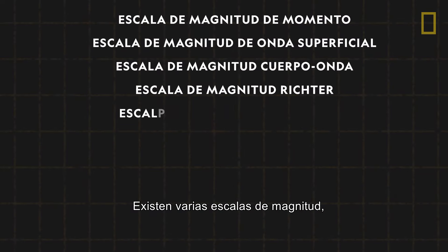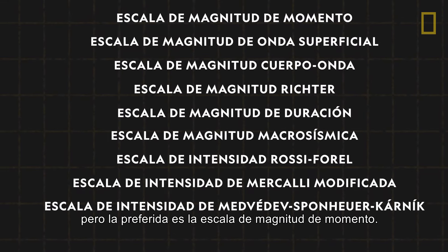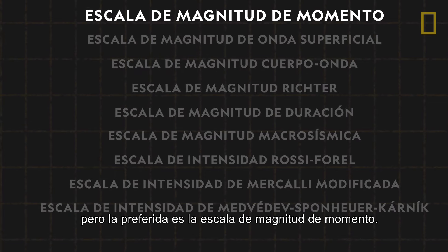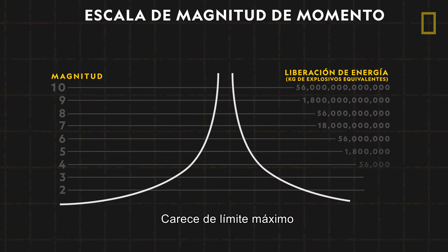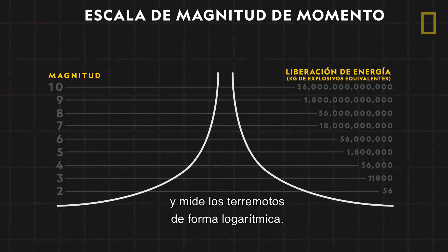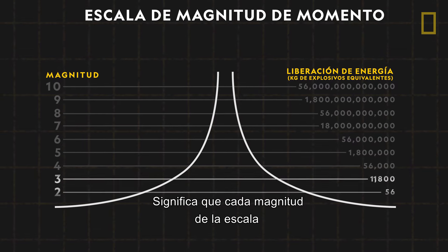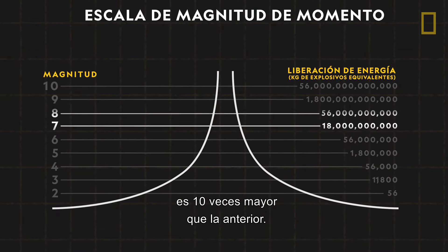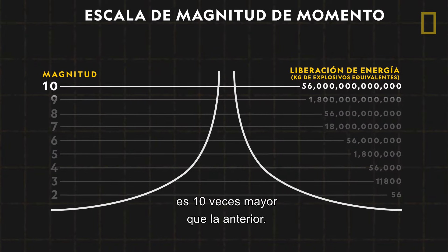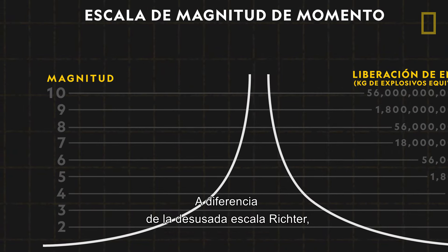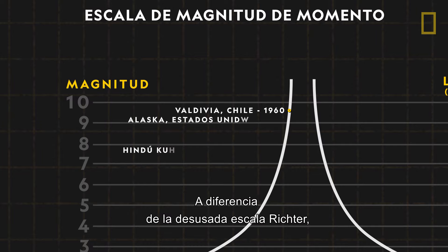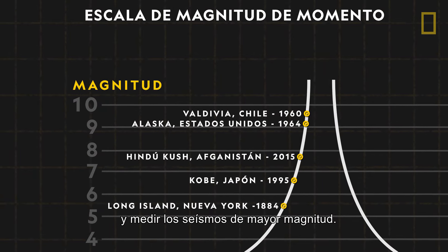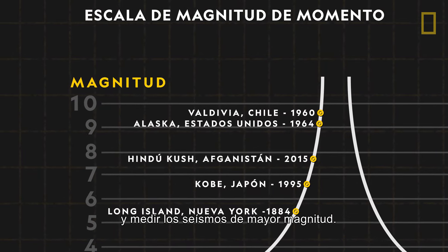While several scales of magnitude exist, the one seismologists prefer is the moment magnitude scale. It has no upper limit, and it measures earthquakes logarithmically. This means that each magnitude on its scale is ten times greater than the one before it. Unlike the now rarely used Richter scale, the moment magnitude scale can be applied globally and can measure quakes of the highest magnitudes.